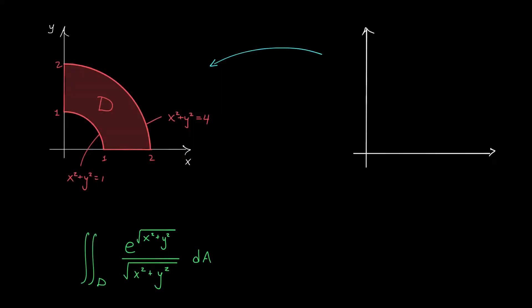Back to our problem. We've agreed that this region d isn't too friendly to work with in terms of x and y, but perhaps we can describe it more simply in a different coordinate system and use our change of variable theorem to evaluate our double integral. This region is bounded between two circular arcs in the first quadrant of R2. If we're dealing with circular arcs, polar coordinates is usually a good choice.